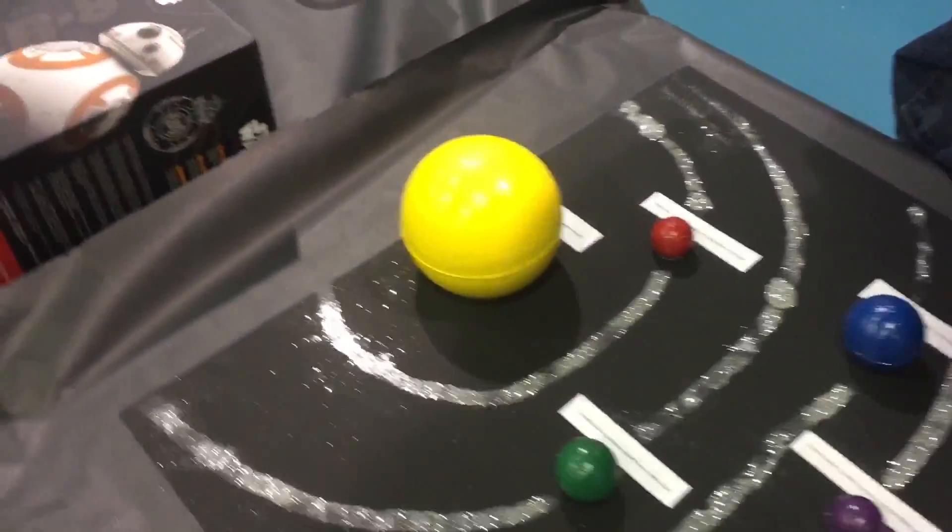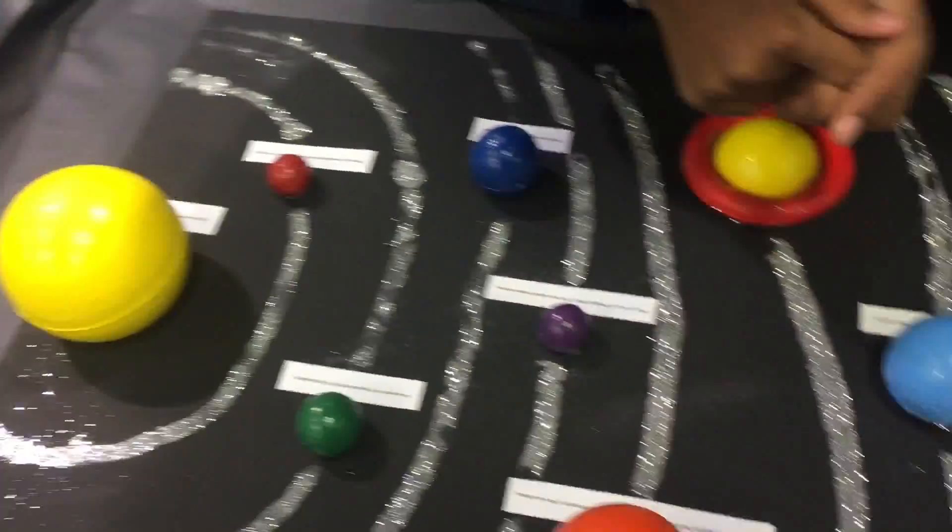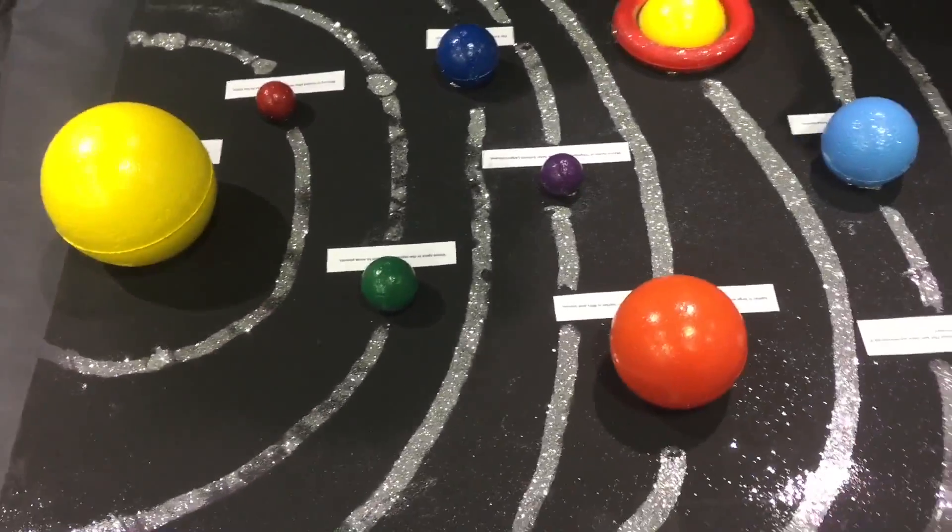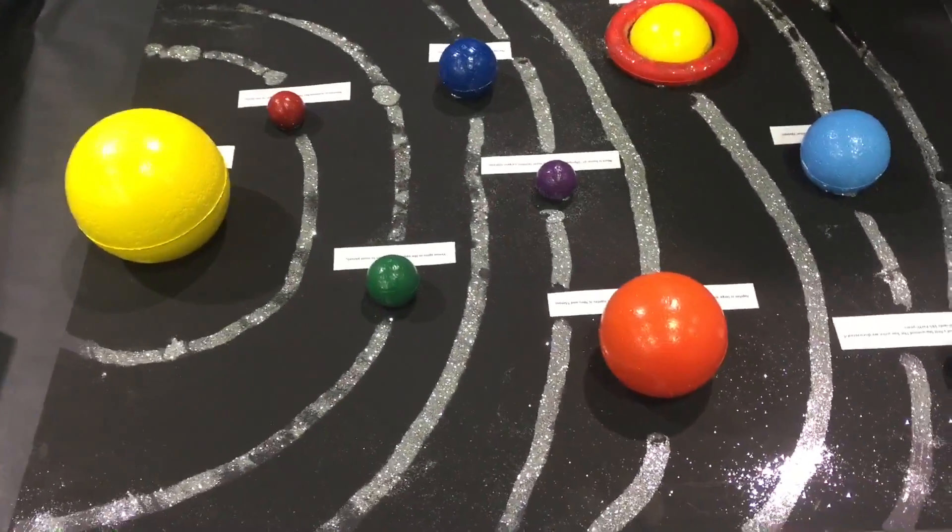In 2011, it finally made its first orbit around the Sun since we discovered it, because one Neptune year is 165 Earth years.